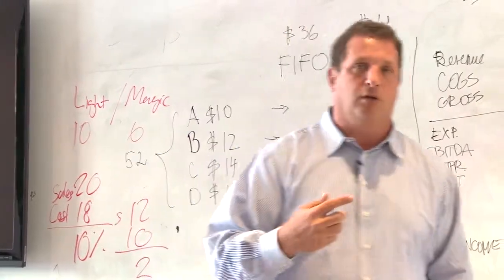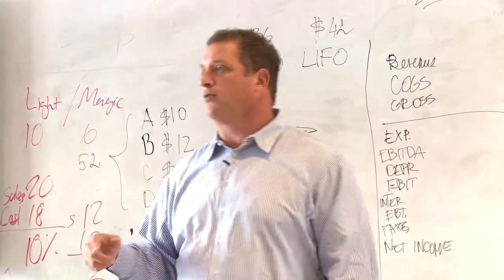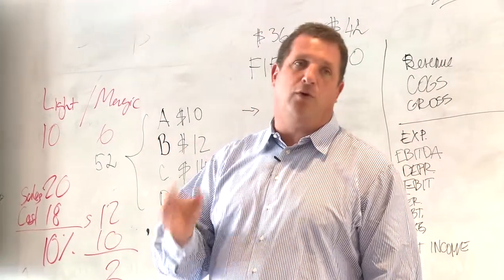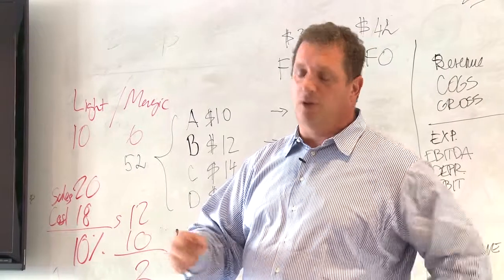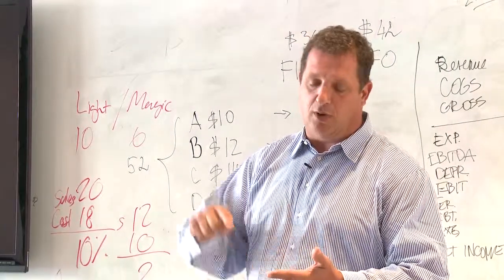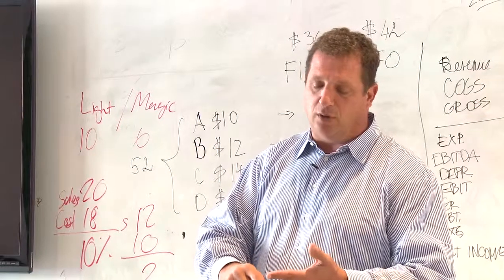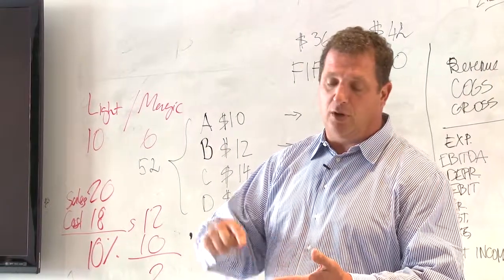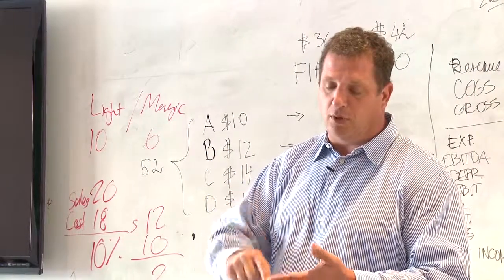And so he said, here's the idea that you need to do. You need to go here in the valley back to all your friends, and you've got to find 30 people that can help you with deal flow.